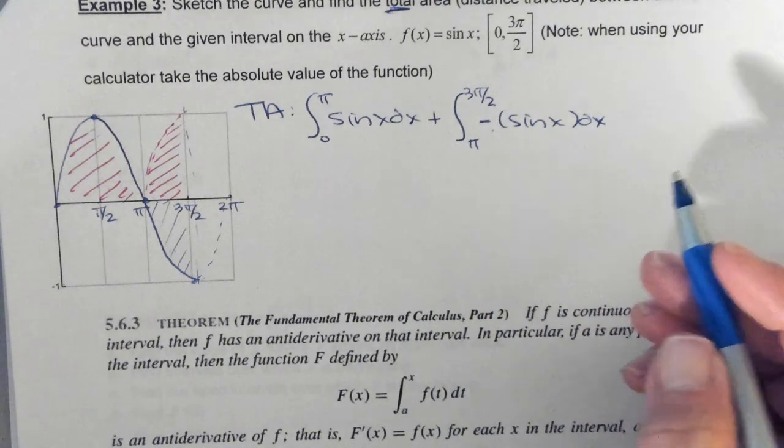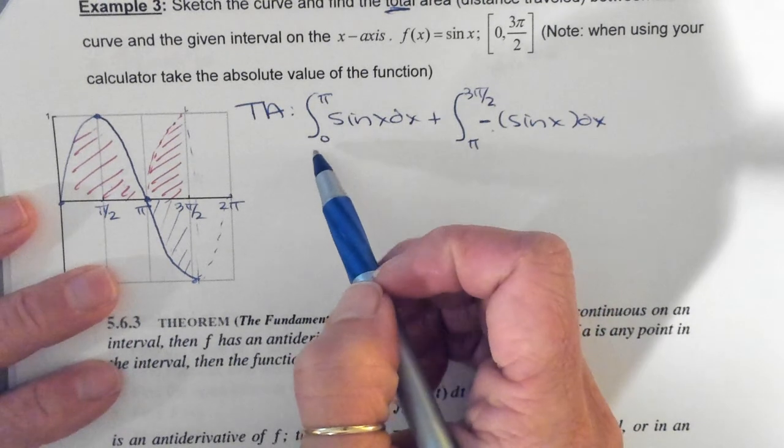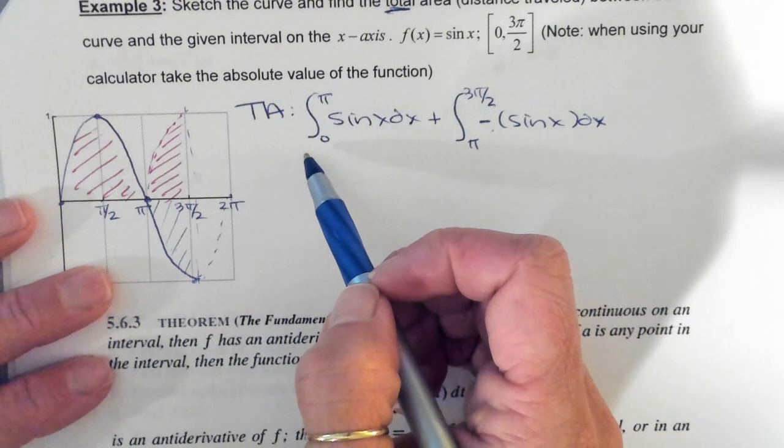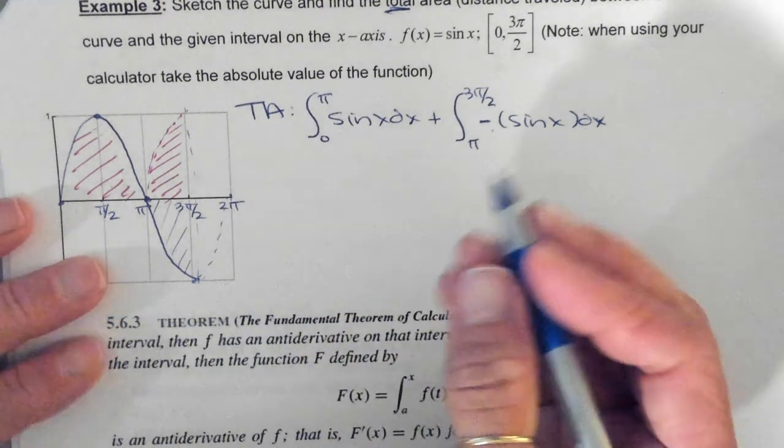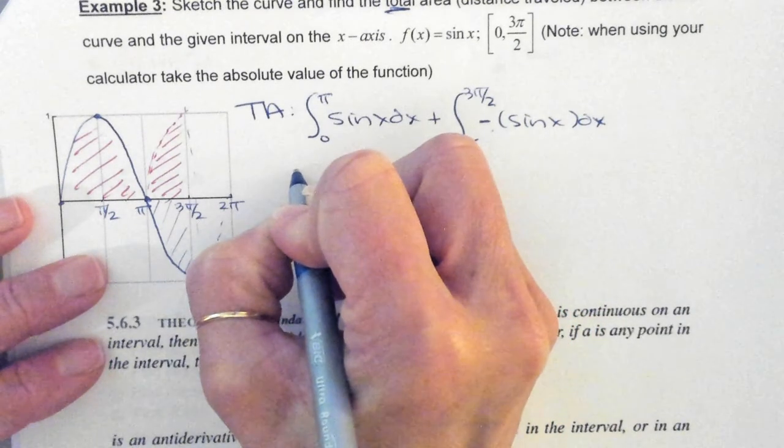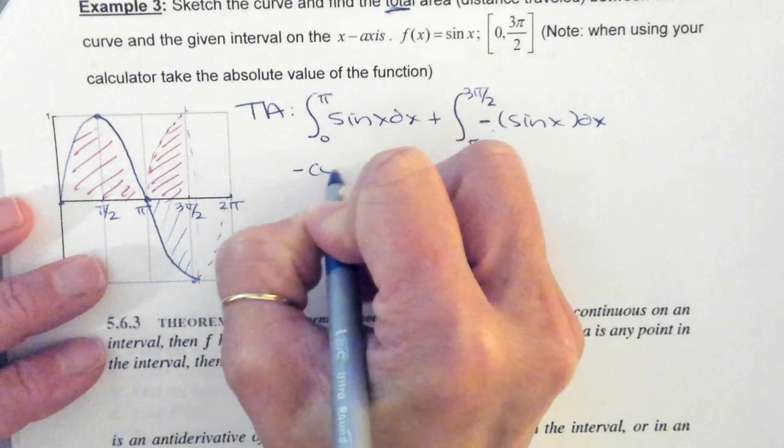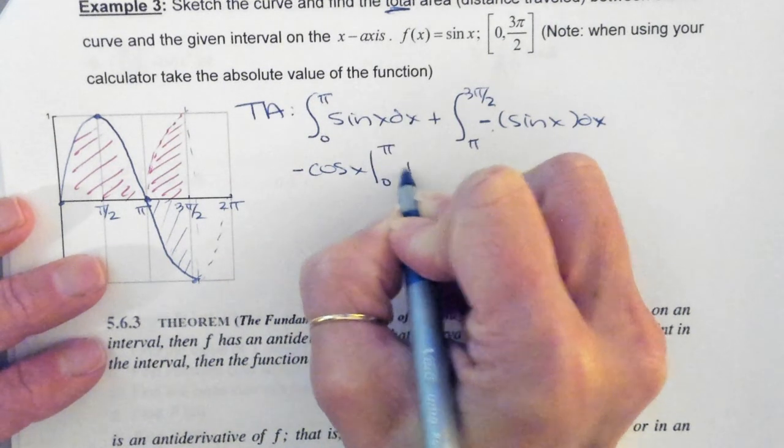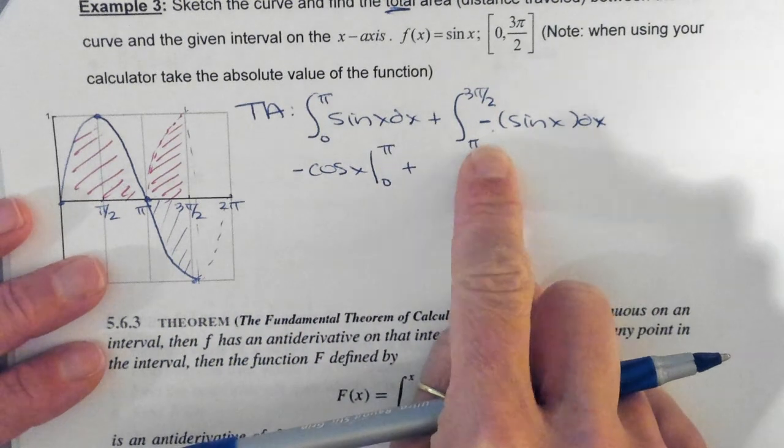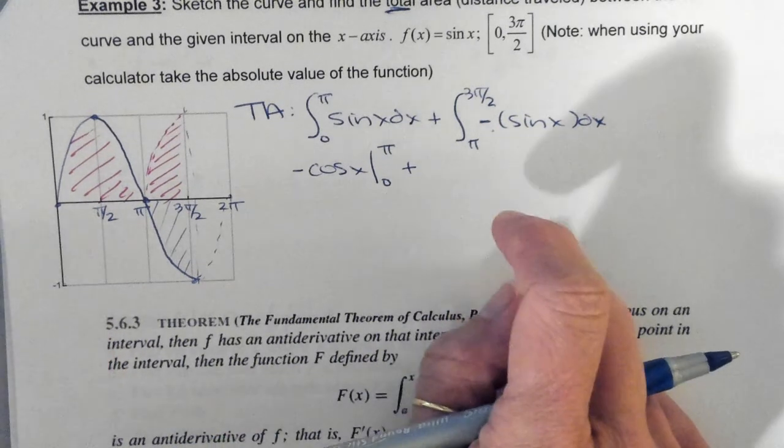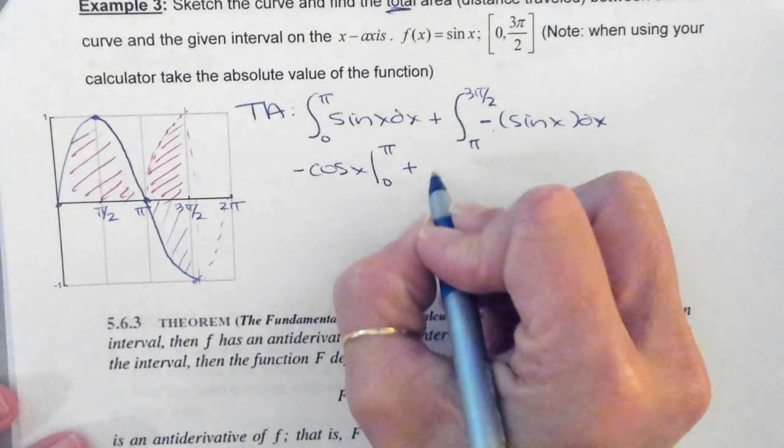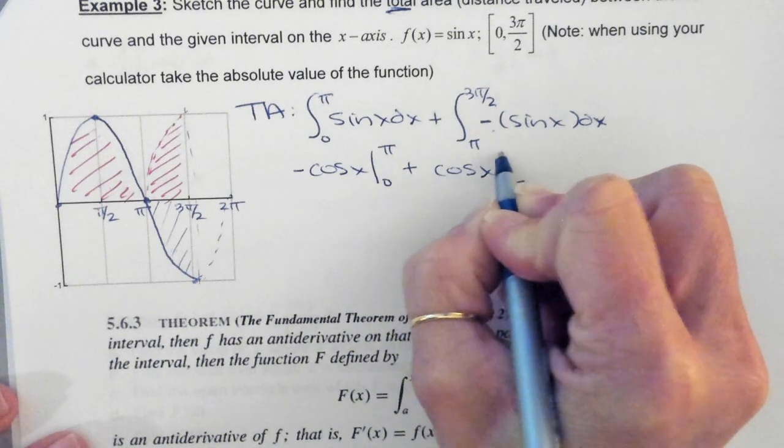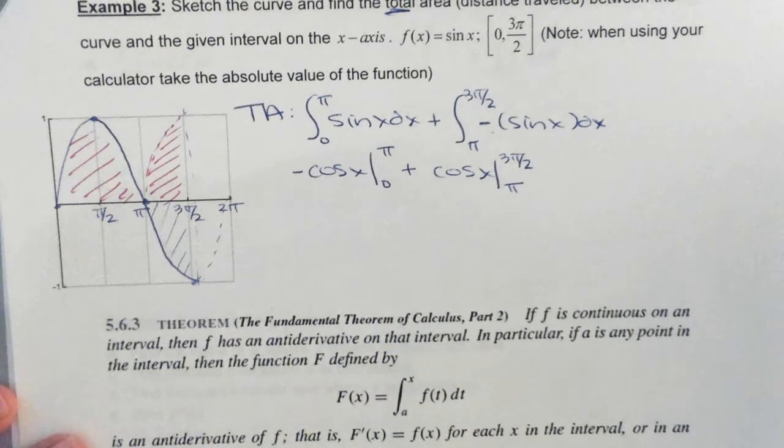So this is showing that you're flipping up. So now we're just going to integrate. So what do I take the derivative of to get the sine? Negative cosine. So this is negative cosine of x to be evaluated from 0 to π, plus, it's just cosine. So then it's the cosine of x from π to 3π over 2.